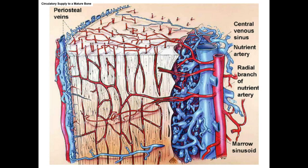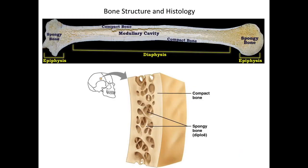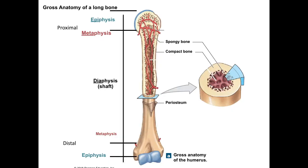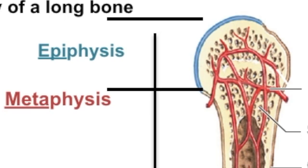Bone tissue is the obvious tissue, but the articular cartilage, the blood vessels, and the nerves are also part of that bone. We're going to take a look at the gross anatomy using a long bone as an example. A long bone has a shaft with two distinct ends called epiphyses — a proximal and distal epiphysis — which are covered by articular cartilage.